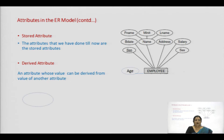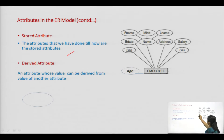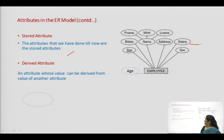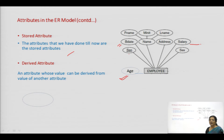Then we have stored and derived attributes. The attributes we have discussed so far — like SSN and salary for employee — are stored attributes, meaning they have values that will be stored in the database. A derived attribute is an attribute which can be derived from some other attribute. For example, the attribute 'age' can be derived from the attribute 'birth date'. It is called a derived attribute and is always shown by a dashed oval in the ER diagram.